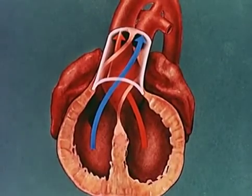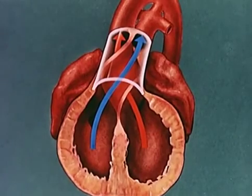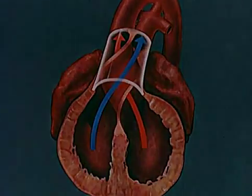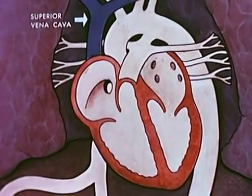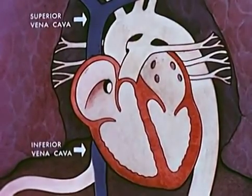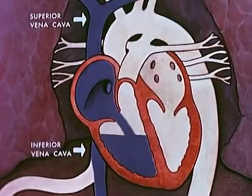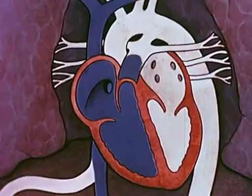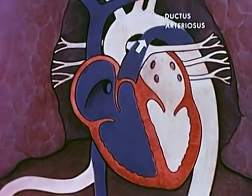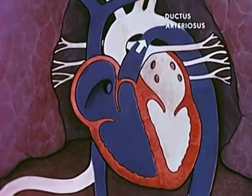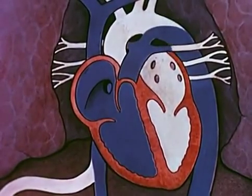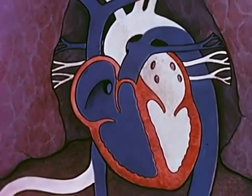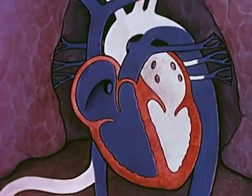Blood from the right ventricle enters the pulmonary artery, which passes in front of the aorta, turning posteriorly on the left side of the mediastinum. Venous blood from the superior vena cava and the inferior vena cava flows through the right atrium and into the right ventricle. It's ejected into the pulmonary artery, where a major portion continues through the ductus arteriosus into the descending aorta. Resistance to flow through the collapsed lungs is so great that only a small quantity of blood enters the pulmonary arteries. A correspondingly small amount of blood is returned through the pulmonary veins into the left atrium.